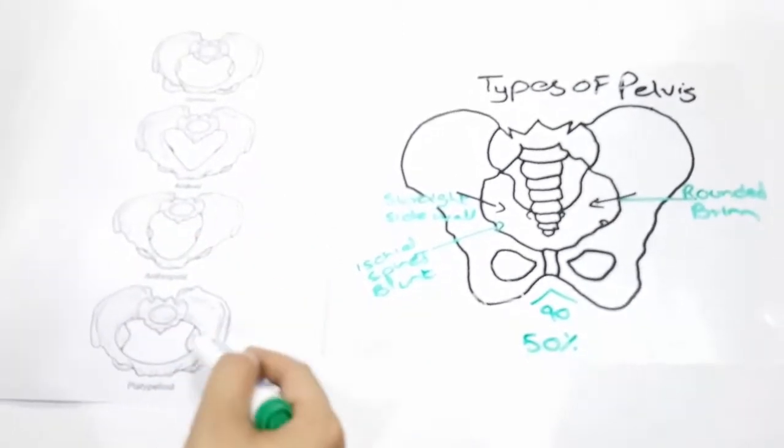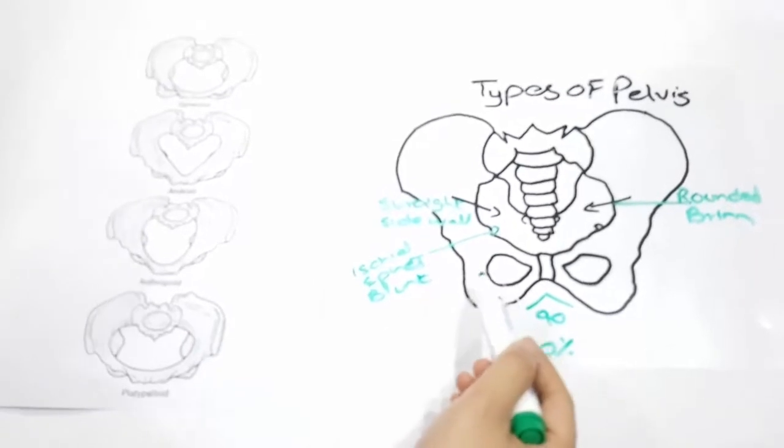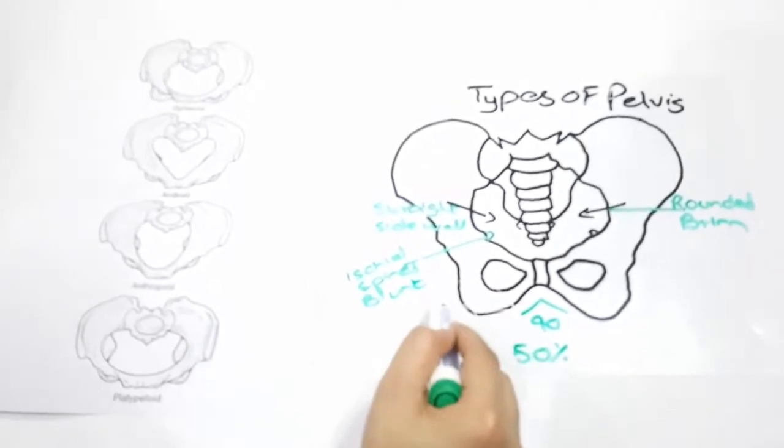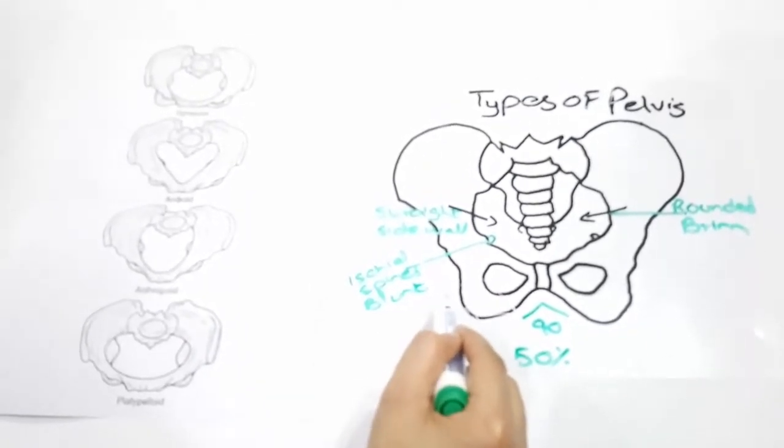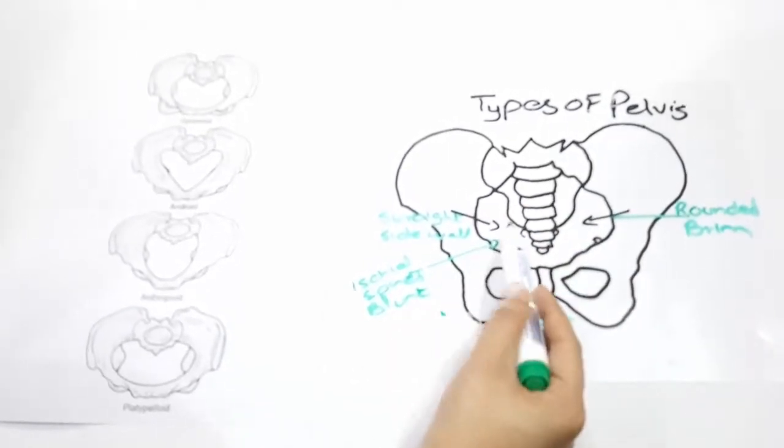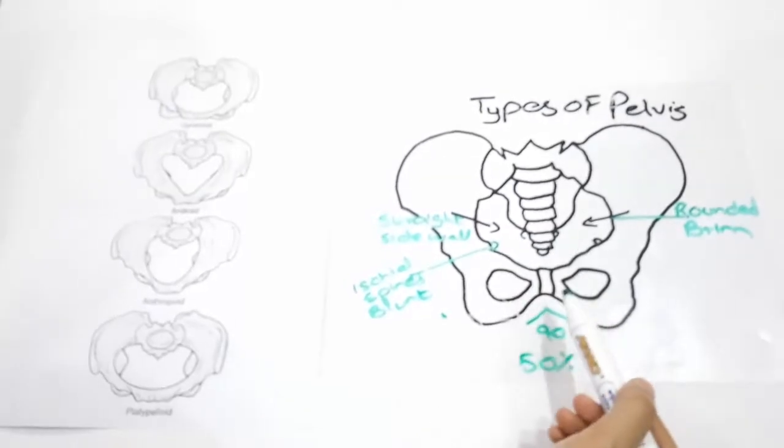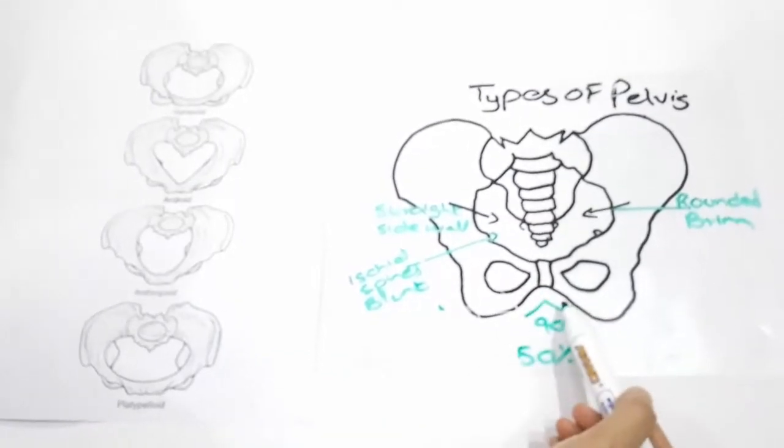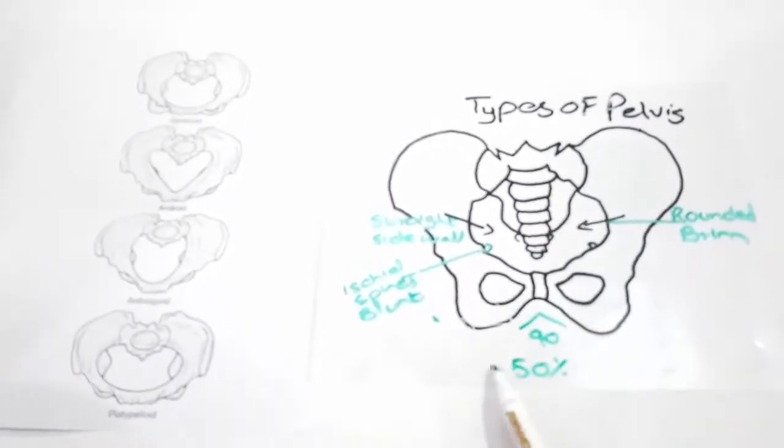Gynecoid pelvis: This is the best type of pelvis for childbearing as it has a round brim, straight sidewalls, ischial spines are not prominent, and a sub-pubic angle of 90 degrees. It has an incidence rate of 50%.